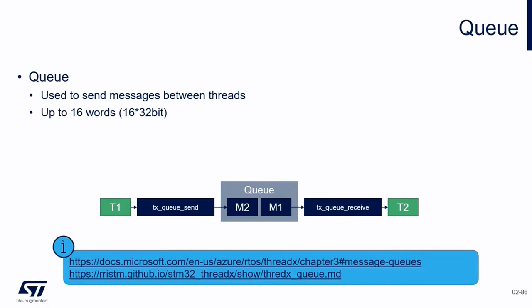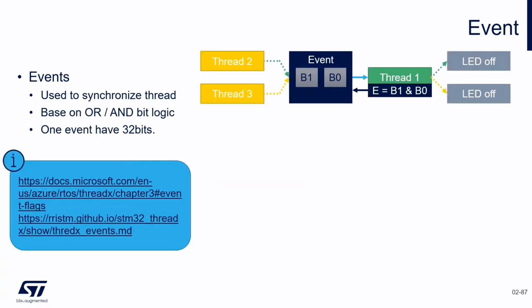The only exception is when a thread is suspended while waiting for a message on an empty queue. In this case, the next message sent to the queue is placed directly into the thread's destination area.